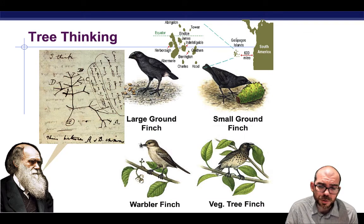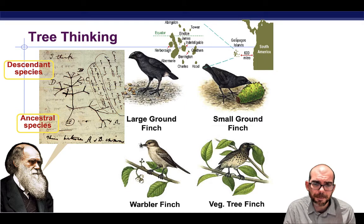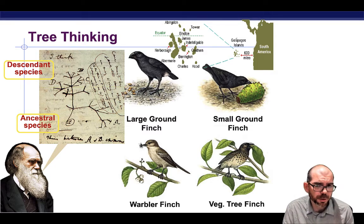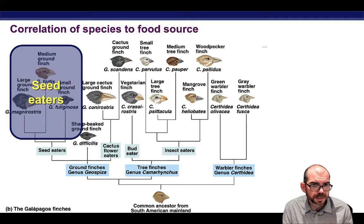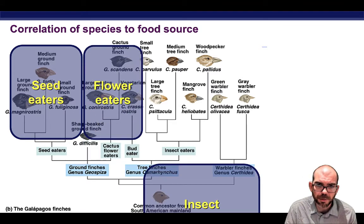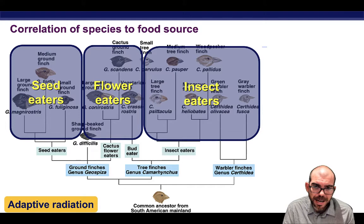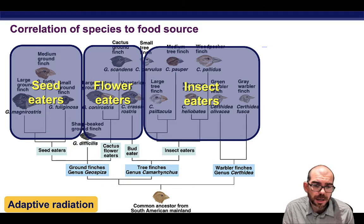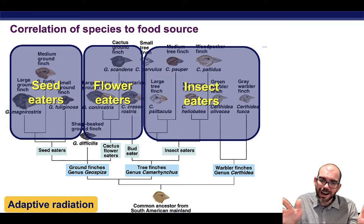Darwin started to think in terms of trees. Perhaps there's an ancestral species — that mainland finch — and then branching descendant species that have filled all these different environments on the islands. The idea is we start with an ancestor, and changes branch out like branches on a tree. Such thinking about life was revolutionary at the time. He noticed a correlation in changes based on the food source of the birds — seed eaters, flower eaters, and insect eaters — all tracked back to a common ancestor from the American mainland. This idea of one ancestral species filling and changing over time into niches on different islands is known as adaptive radiation.